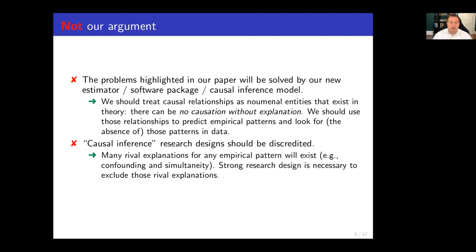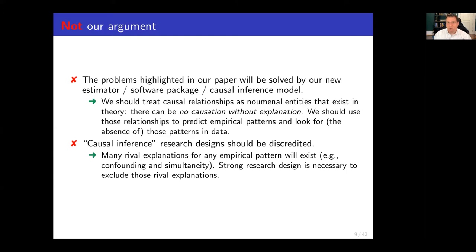We're not saying everything you know is wrong, or that causal inference research design should be discredited. Obviously all research designs have weaknesses. We're not here to convince you that RDD or experimentation or whatever is bad. All those things are still going to be in your toolkit if you believe what we are saying — I'm certainly going to continue to use them. What we're really talking about is interpretation. And in addition, we still need those designs to rule out rival explanations — rival causes like confounding and simultaneity. It's rather about a different way of using those tools and thinking about them, and in some ways changing the project we're engaged in as social scientists and political scientists.